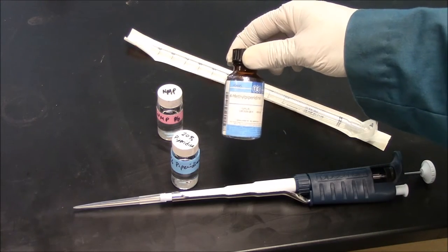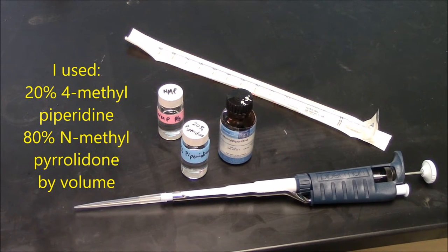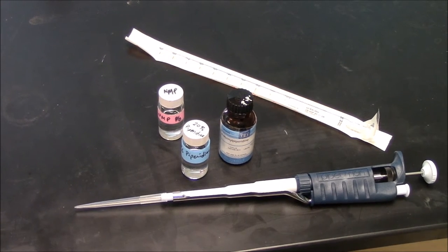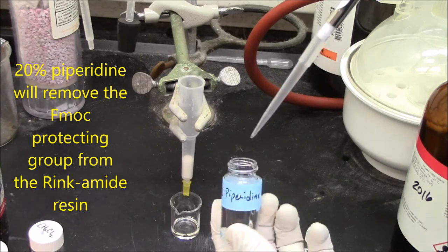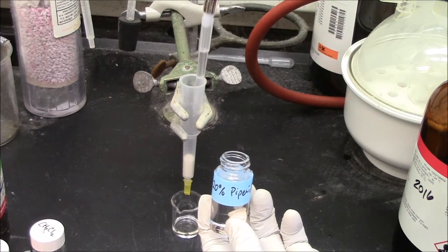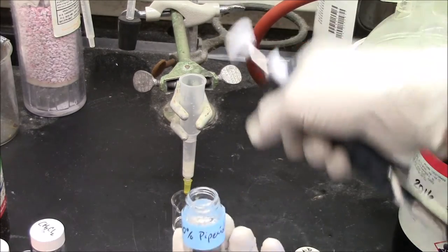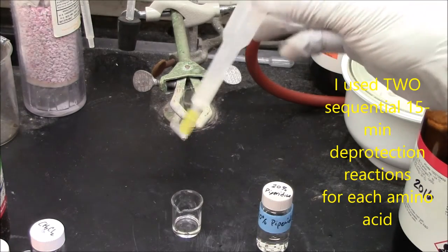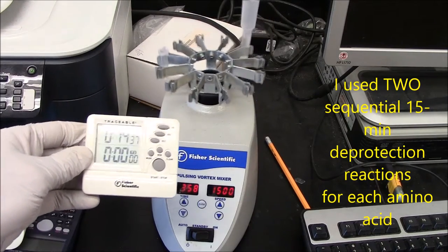The rink-amide resin starts with an F-moc group attached. To remove that, we'll make a solution of piperidine in NMP, 20% piperidine, 80% NMP. Piperidine is a base that will selectively react with the F-moc group. I'm adding a milliliter of 20% piperidine to the beads in the column. I'll use the lid, snap, and I'll agitate by hand first. Here I have it on the vortexer, 1500 RPMs, 15 minutes.